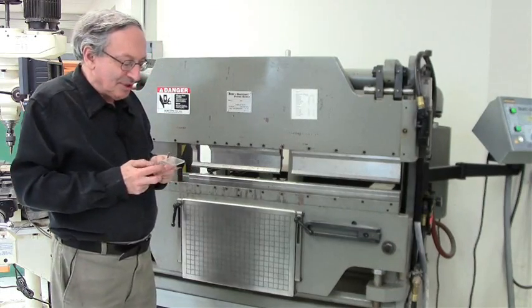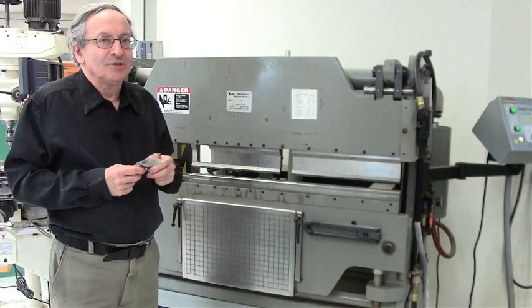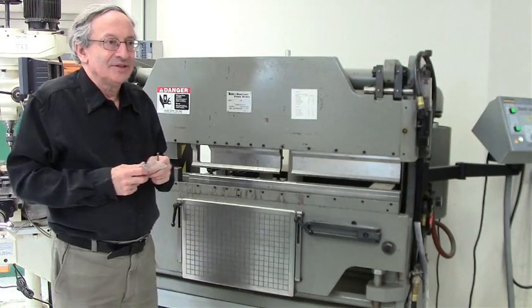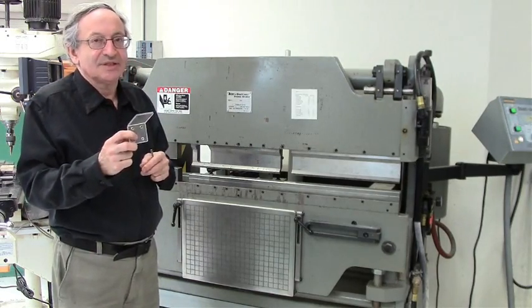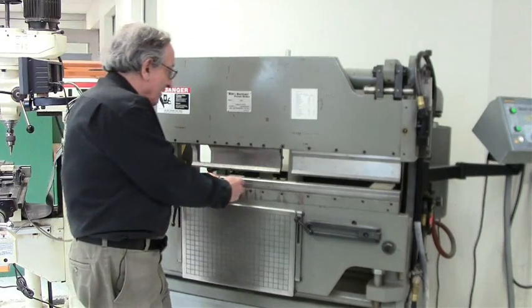Polycarbonates are amazing materials because they are very shatter proof and ductile. You can take this 1/16 inch polycarbonate, bend it as if it was sheet metal and it doesn't break.